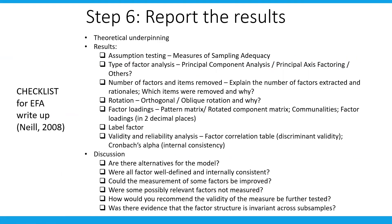The last part of this video focuses on reporting the results. This checklist for EFA reporting comes from James Nail, published in 2008. Based on the checklist, the first thing to clarify is the theoretical underpinning, such as how the constructs are organized and measured in past studies, followed by the results section. For the results, you can include assumption testing — is EFA appropriate for your study? — the type of factor analysis used (PCA or PAF), the number of factors and items removed based on factor loadings, the rotation method used (orthogonal or oblique), factor loadings and the cut-off point, communalities, factor naming, and finally the results of validity and reliability analysis.